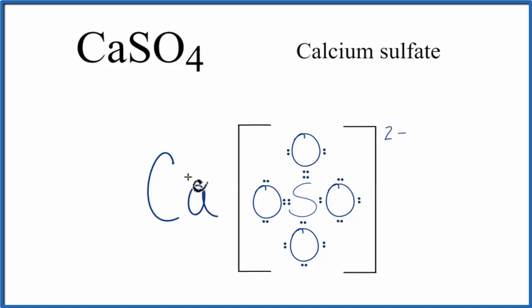So calcium, it's in group two on the periodic table, it has two valence electrons. It'll transfer those to the sulfate. When it does, it's lost two electrons, and electrons are negative, so it lost two negative charges. It's now two plus.